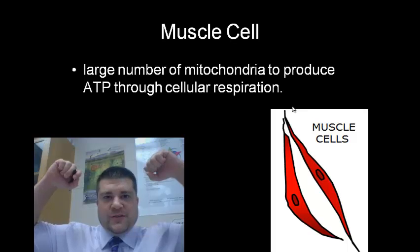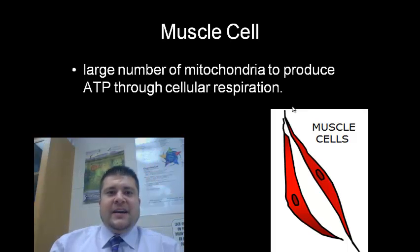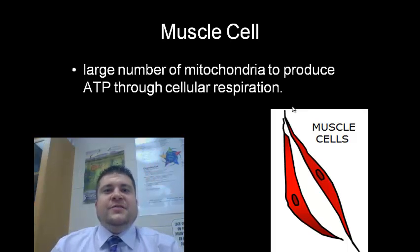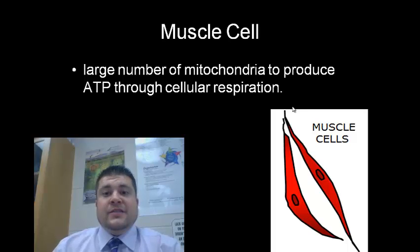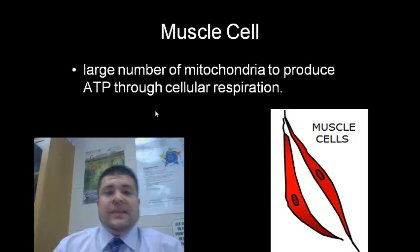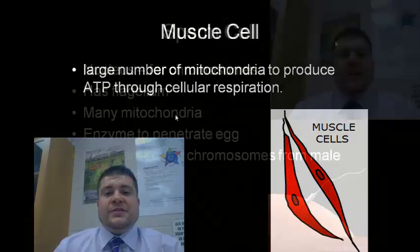Muscle cells have large amounts of mitochondria because they need to produce energy so that the cells can actually move, and they do this through cellular respiration.